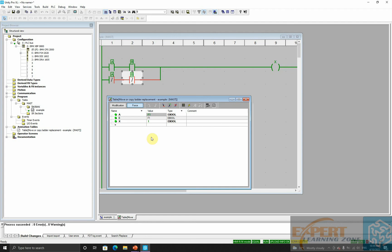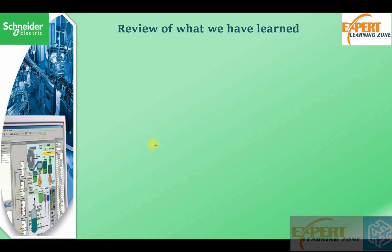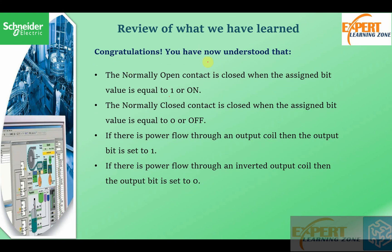Let's review what we have learned. A normally open contact is closed when its assigned bit variable equals zero or off. If there is a power flow to an output coil, the output bit is set to one, and if there is a power flow to an inverted output coil, the output bit is equal to zero.